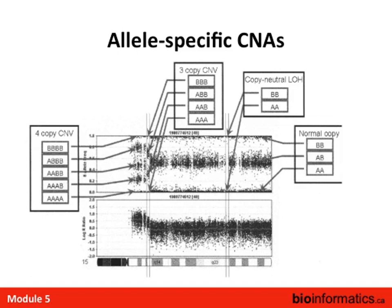Here's an example of what this looks like in action. Each black dot represents a probe on the array, physically ordered on the chromosome. We can see a copy number gain that induces four copies, detectable by the different genotypes induced. Here we have examples of all five resulting genotypes. There's also a region showing copy neutral loss of heterozygosity — no evident change at a copy number level, but no evidence of heterozygosity. The normal state shows AA, AB, or BB at different loci.